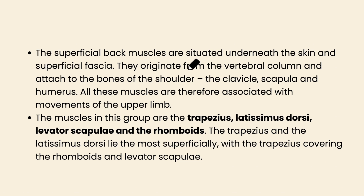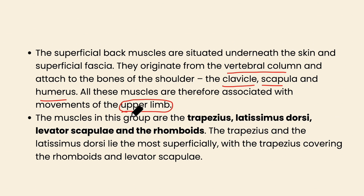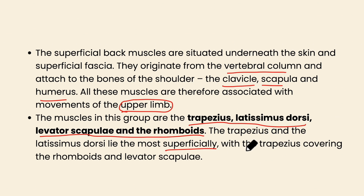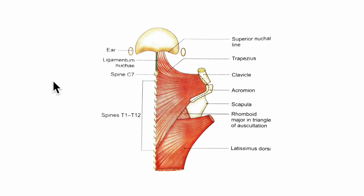The superficial back muscles are situated underneath the skin and superficial fascia. They originate from the vertebral column and attach to the bones of the shoulder — that is mainly the clavicle, scapula and humerus — and are therefore associated with the movements of the upper limb. The muscles in this group are the trapezius, the latissimus dorsi, the levator scapulae and the rhomboids. The trapezius and latissimus dorsi lie the most superficially, with the trapezius covering the rhomboids and levator scapulae. Now let us learn about each of these muscles — its origin, insertion, nerve supply and action in detail.